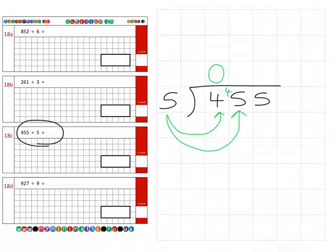Then how many fives fit into 45? Well, that's going to be nine, so that's 45, so there's nothing to carry over this time. Then fives into five goes one, so we have a final answer of 91.